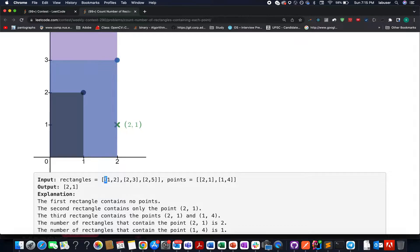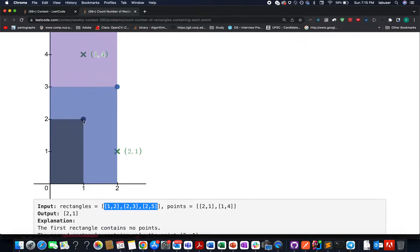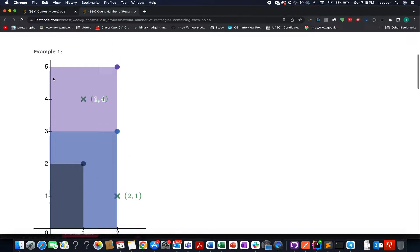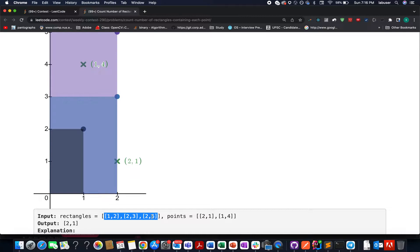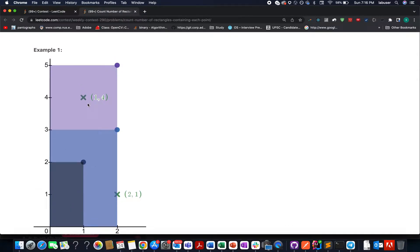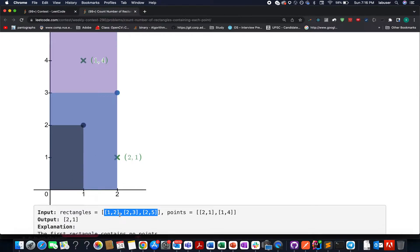Here we are provided with 3 rectangles and these are the areas that are covered by these rectangles. So 1,2 is represented by this one. The second one is 2,3 which is represented by the light blue one and the last one is the purple one which is represented by 2,5. It starts from 0,0 - all these rectangles start from 0,0 and spread across the l and h values given to us.